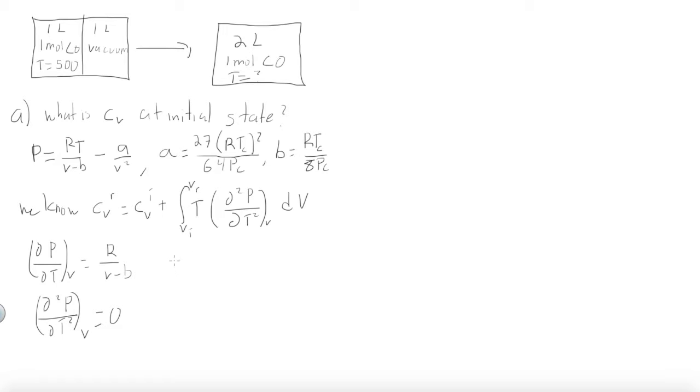And that is important because now we know that the second term in the equation is zero. So now we can just see that the CV real is equal to the ideal CV.